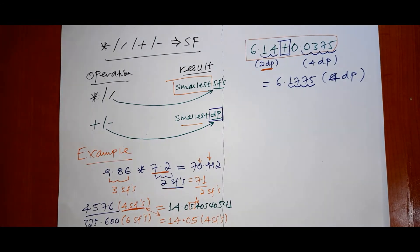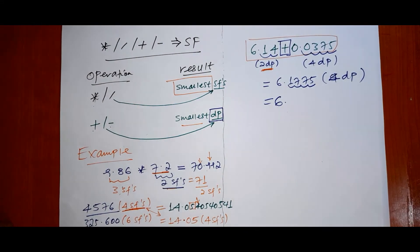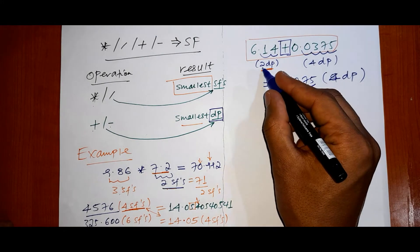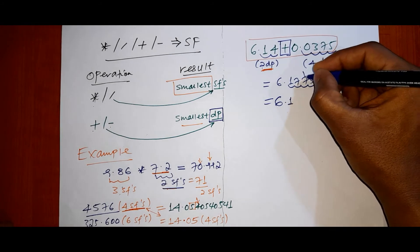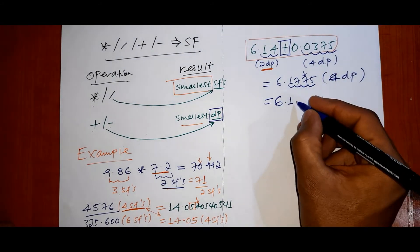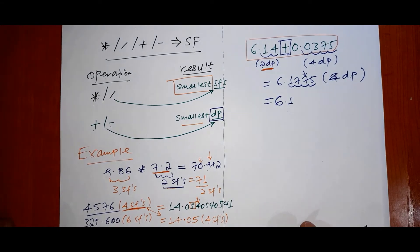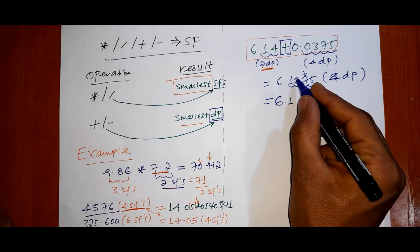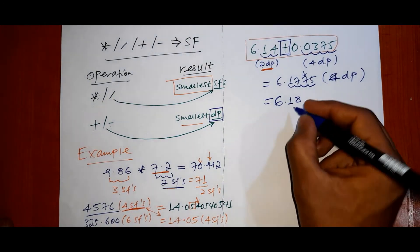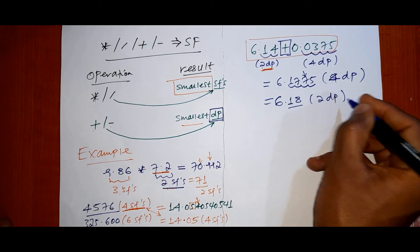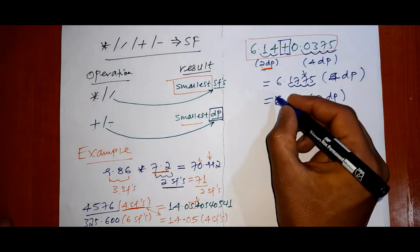The smallest decimal places is two, from 6.14. So the result should have two decimal places. Looking at 6.1775, we keep up to the second decimal place: 6.17, and the next digit is 7 — which is above five — so we round up. The result becomes 6.18, which has two decimal places.